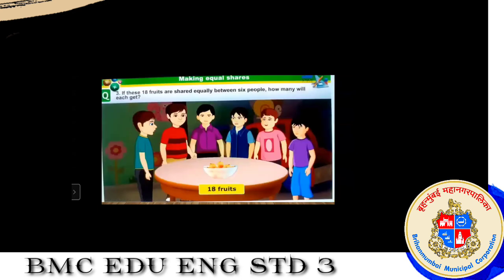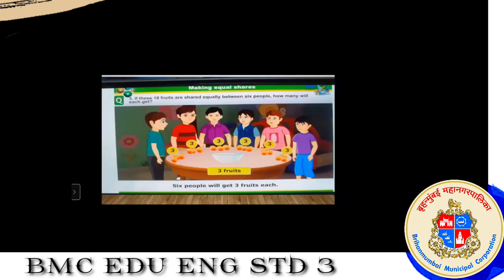Again there are 18 fruits, but now the number of people has increased to six. If 18 fruits are shared equally between six people, how many will each get? Each will get three fruits. Six people will get three fruits each. In this way we do equal sharing.